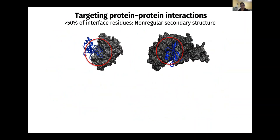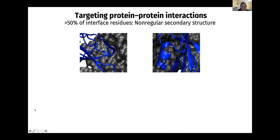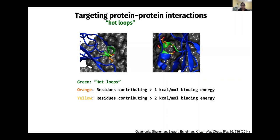People are very interested in breaking specific protein-protein interactions that are overly populated in a disease. If we have structural information, it makes the design of an inhibitor easier. If we take a look at all protein-protein interactions in the protein data bank, we see that 50% of the interface residues form non-regular secondary structure. If I zoom in here, it looks like the blue protein is forming some kind of loop-like structure glued to the target gray surface. These are what people call hot loops — loop-like structures that contribute a lot to binding affinity.